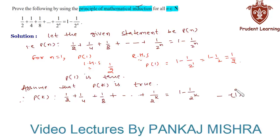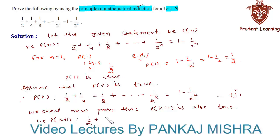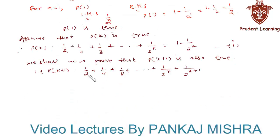In the final generalization step, we shall now prove that P(k+1) is also true. That is, P(k+1) states that 1/2 + 1/4 + 1/8 all the way up to 1/2^k plus 1/2^(k+1).